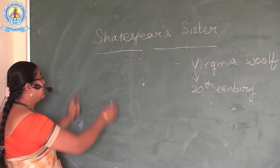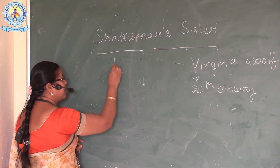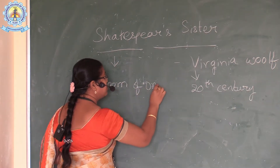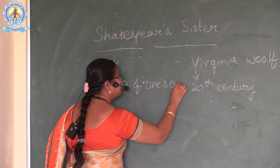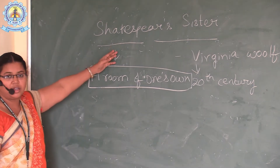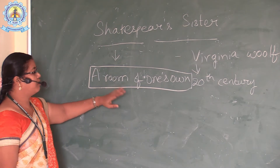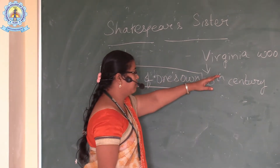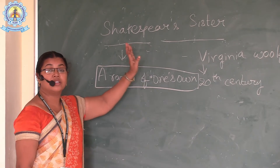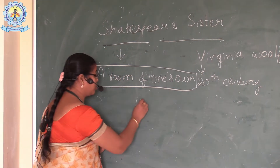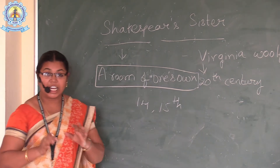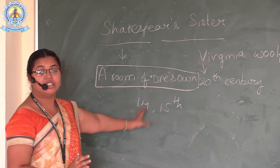Shakespeare's Sister is a topic taken from A Room of One's Own, a collection of essays written by Virginia Woolf. It shows the picture of women who lived in the 14th and 15th centuries. She wanted to project the lifestyle of women who lived in those centuries.